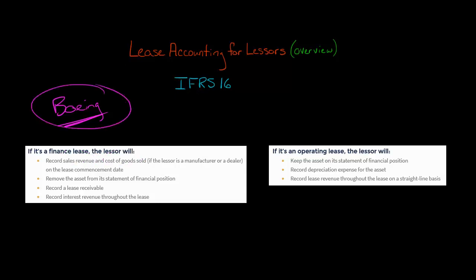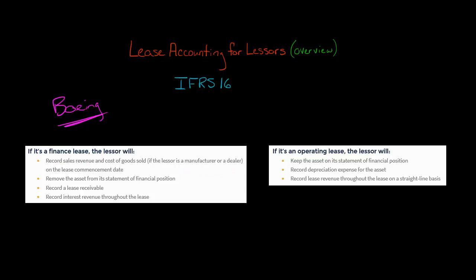Boeing is going to record sales revenue and cost of goods sold upon the commencement of the lease. So they're going to be booking a sale, and when you take the sales revenue minus the cost of goods sold, you're going to have selling profit. So there's going to be selling profit if they're a manufacturer or dealer.